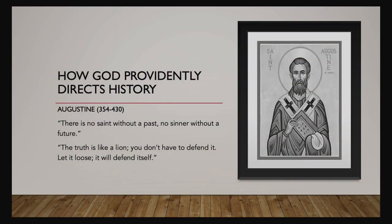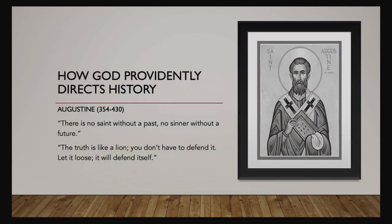Augustine, the famous church father, teaches us how God providentially directs history. He was alive at the time of the fall of the Roman Empire and wrote a book called The City of God, in which he explained that God has a city and man has a city, and God's city is always going to win no matter how man's city looks at a point in history. He saw the decline of what had become a Christian empire and suggests to us that God is providentially working no matter what the outward look is. Augustine tells us regarding Christian living: 'There is no saint without a past and no sinner without a future, and the truth is like a lion — you don't need to defend it. Let it loose and it will defend itself.'